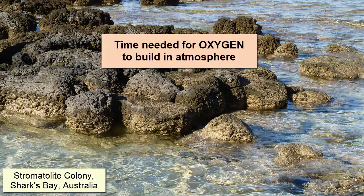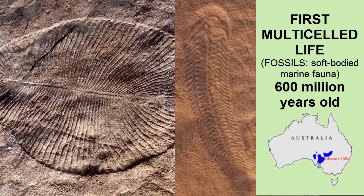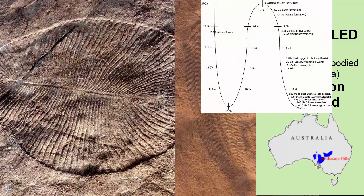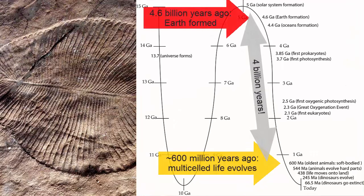How much work? The oldest evidence of multi-celled life was discovered in fossils of soft-bodied marine organisms in 600 million year old rocks in the Ediacaran hills of Australia. That's 4 billion years after Earth formed, and in the last one-ninth of Earth's history.